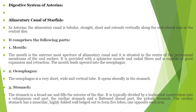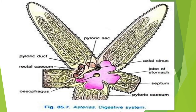The stomach is a broad sac that fills the interior of the disc. It is typically divided by a constriction into a voluminous oral part — the cardiac stomach — and the pyloric stomach. Here you can see the diagram: the pyloric is on the oral surface, and the mouth is present.